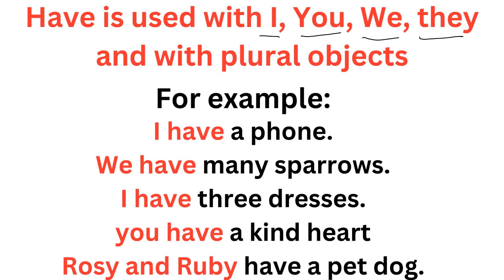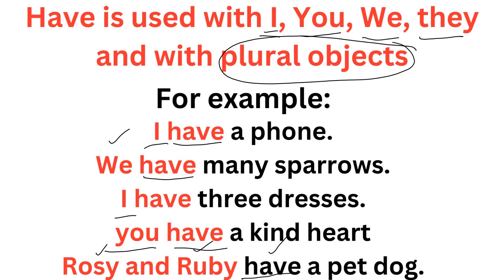Let's understand this with some examples. 'I have a phone' — I have a new phone — mere paas ek phone hai. 'We have many sparrows' — because 'we' is there. 'I have three dresses' — because I is there, I ke saath have use hoga. 'You have a kind heart' — you is there, is liye have ka use kiya. 'Rosie and Ruby have a pet dog' — because here we are talking about two persons, more than one. So plural objects ke saath we use have.